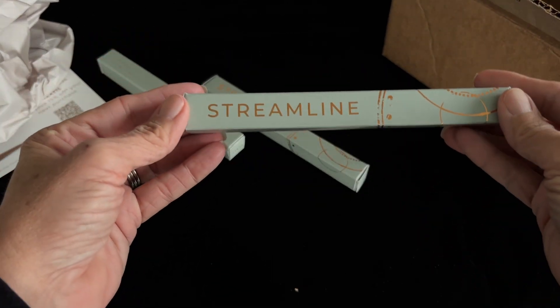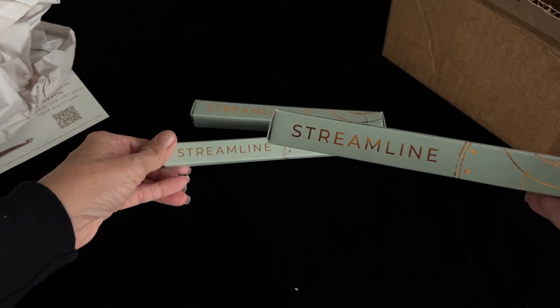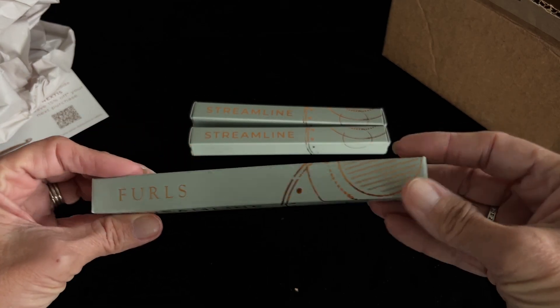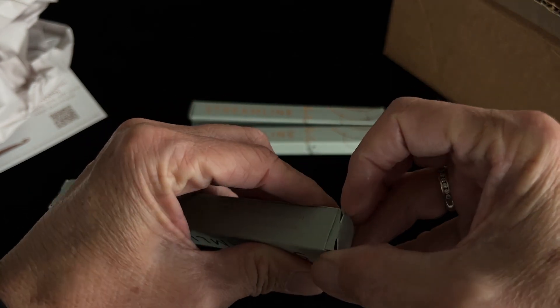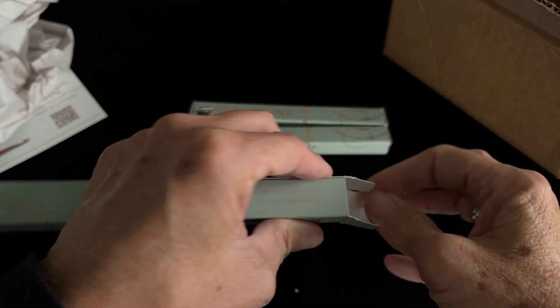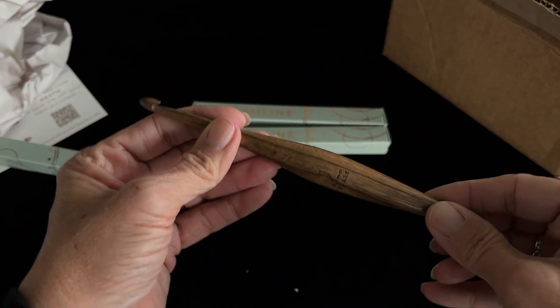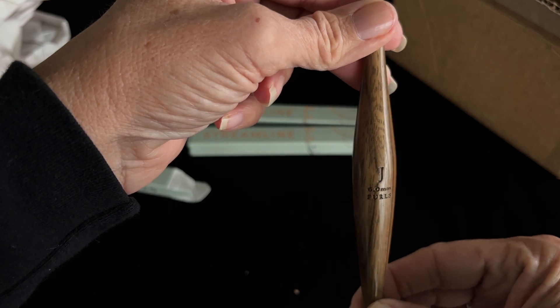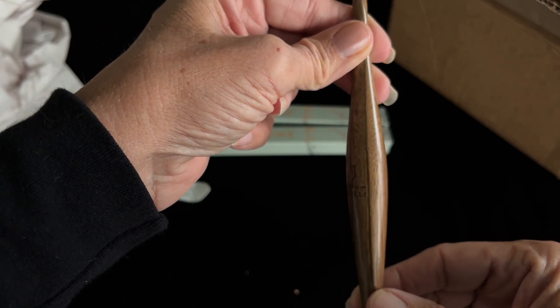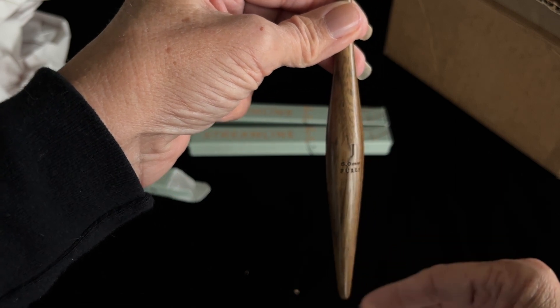So this is the streamline. And they actually all say streamline on the box. And let's see what I got. So this is the wooden hook. And you can see there it's a J, right there, 6.0 millimeter.